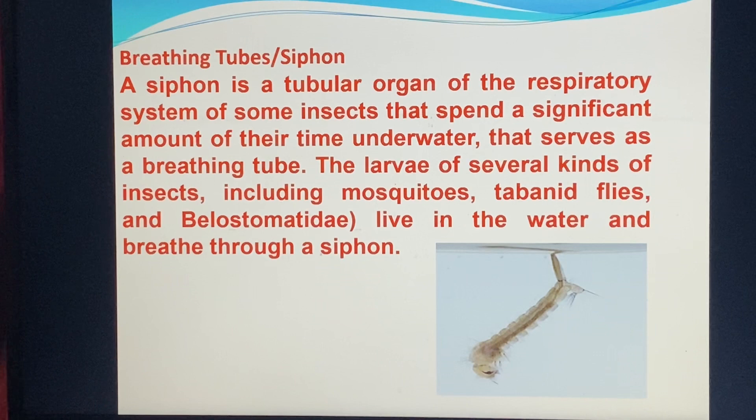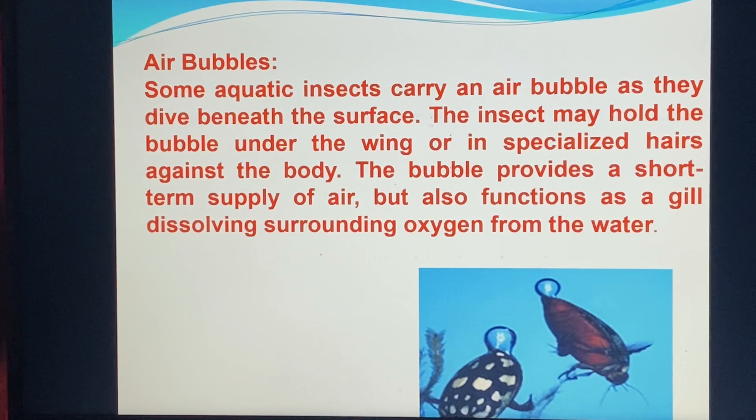The water insect pulsates using the siphon to obtain oxygen. According to some sources, carrier insects carry air bubbles as they live near the surface. The insect may hold the bubbles under the wing, and the air is stored there.